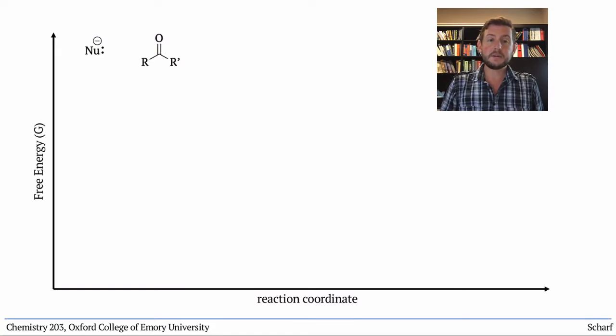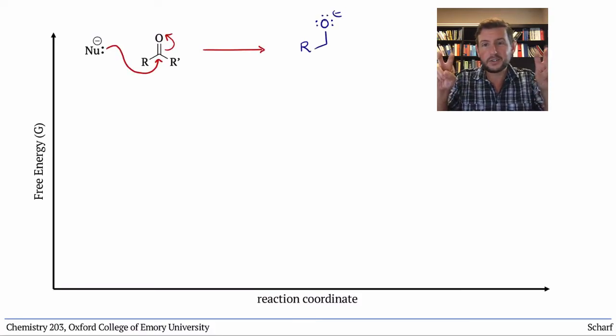They react by the nucleophile attacking CO pi star to create a tetrahedral intermediate.